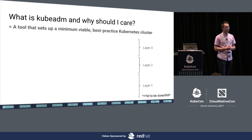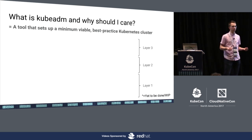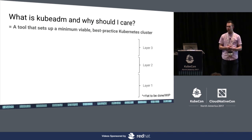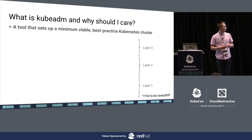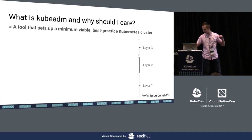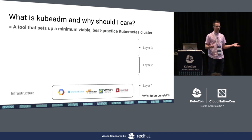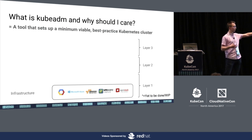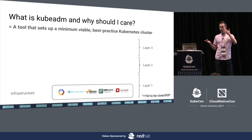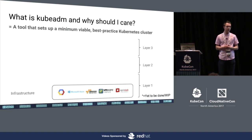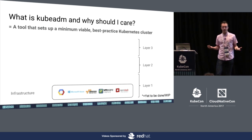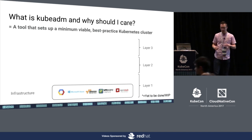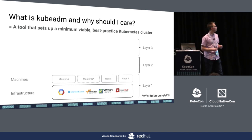Let's start with the scope of KubeADM — what should it do and how does it fit into the ecosystem? At the bottom of the stack we have some kind of infrastructure: public clouds, bare metal, Raspberry Pis on a desk — anything that has machines.